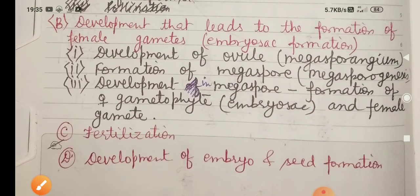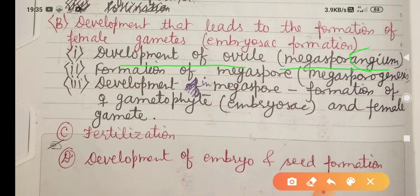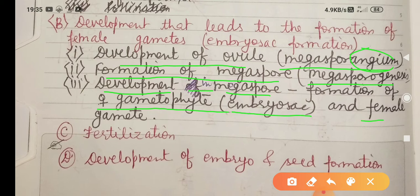Part B comprises development of ovule, that means megasporangium, and formation of megaspore, that means megasporogenesis. The third one is development in megaspore and formation of female gametophyte, that means embryo sac and female gametes. The third major heading is development of embryo and seed formation.